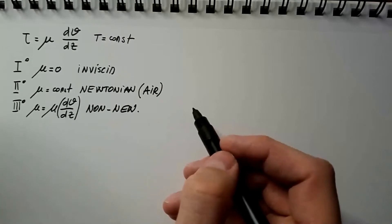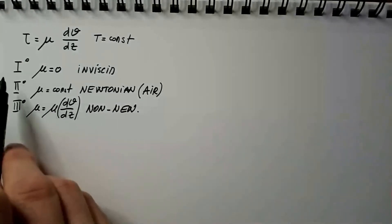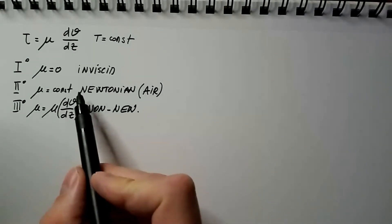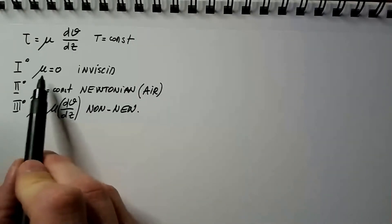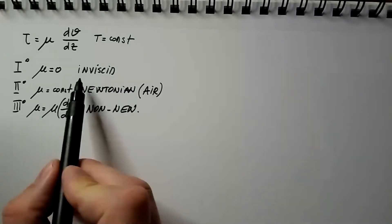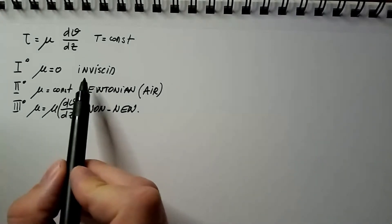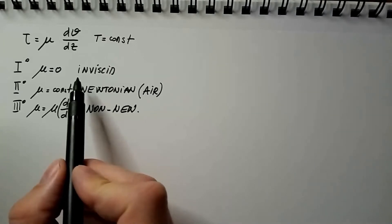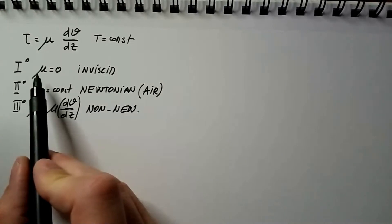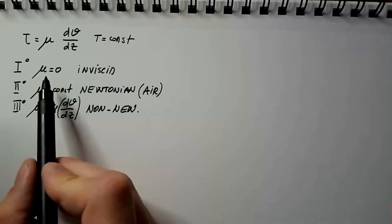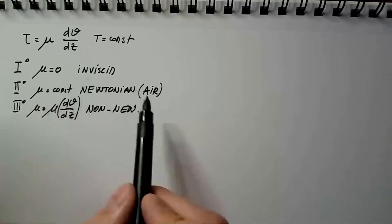And we will first discuss type number one and type number two. The first question we need to ask is, is this assumption of mu equals zero valid, and do we have any fluids that are truly inviscid? The answer is no. There are no fluids that are absolutely 100% inviscid, but the assumption of fluid without viscosity or inviscid fluid is very accurate for a large amount of fluids, including air.